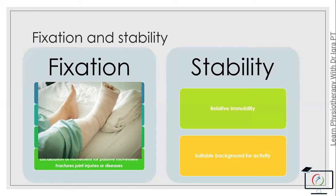Stability is a relative immobility. It provides a suitable background for activity by immobilizing the part that is not required in the movement to increase the efficacy of the movement. For example, during the abduction of the shoulder, the vertebrae remain immobile to allow the movement with more efficacy.